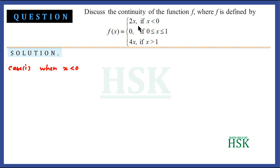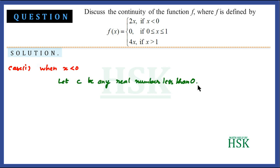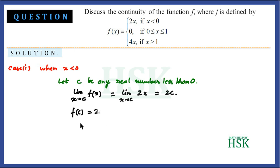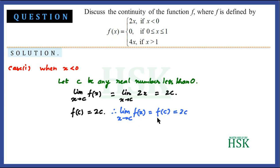To solve this, we check continuity in all intervals. For x < 0, let c be any real number less than 0. Then the limit of f(x) as x tends to c equals the limit of 2x as x tends to c, which equals 2c. And f(c) = 2c since f(x) = 2x in this interval. So the limit equals f(c) = 2c.